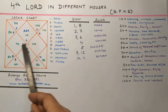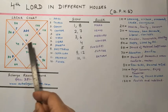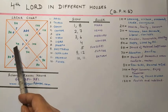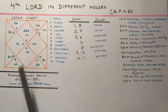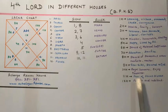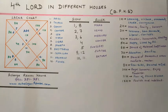If the 4th lord be placed in the 10th house, the native will enjoy royal honours, be an alchemist, be extremely pleased, will enjoy pleasures, and will conquer his five senses.